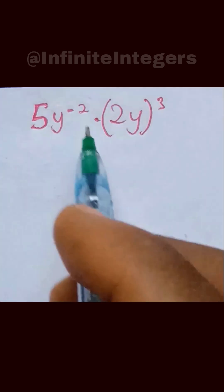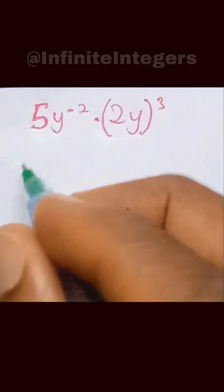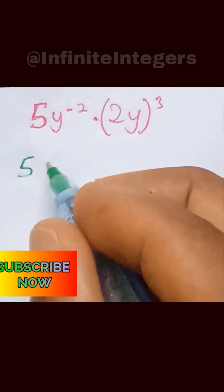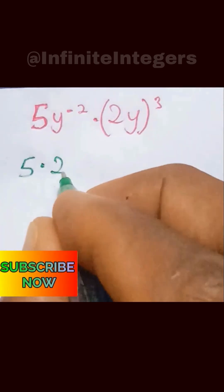For this one, we collect the like terms. We have 5 multiplied by 2.